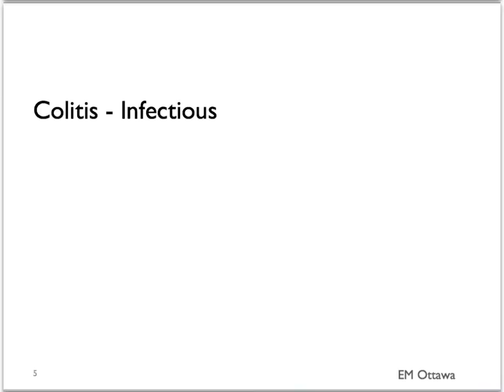First, let's look at colitis. Remember that colitis can be caused by infection, inflammation, and ischemia. For infectious colitis, the treatment usually includes identifying what organism caused the infectious colitis. Once the organism is identified, antimicrobials should be started.